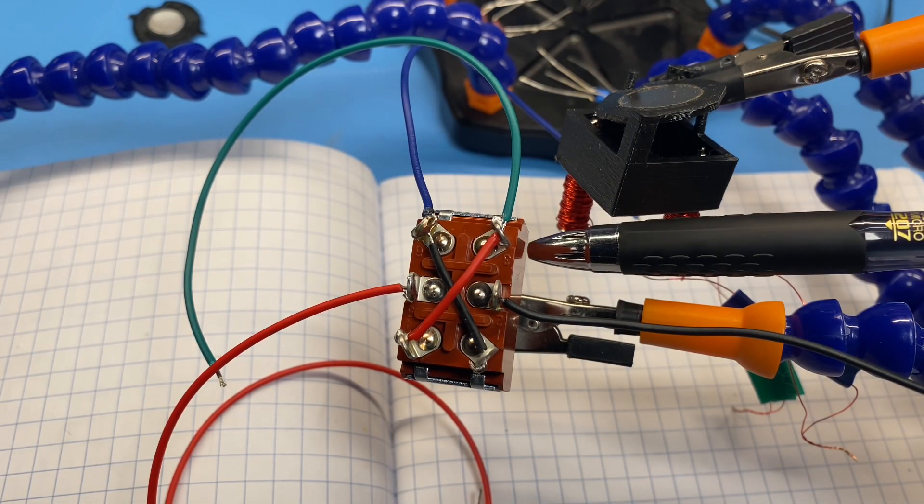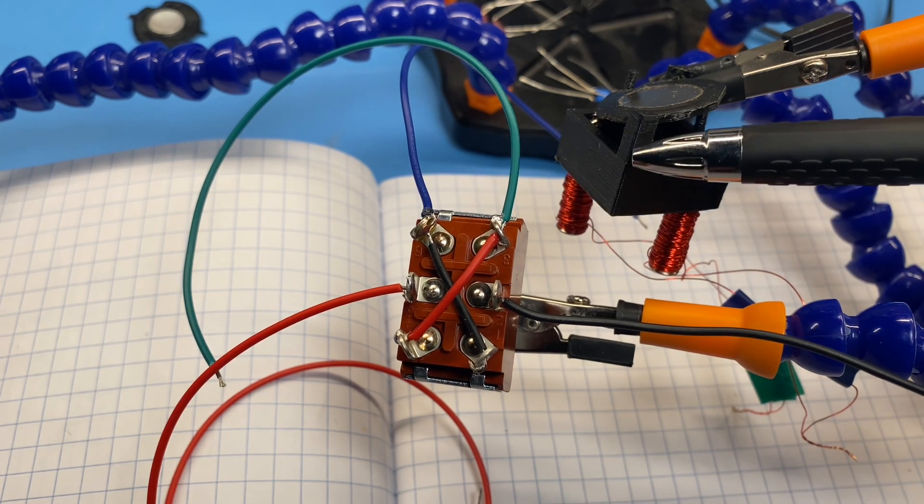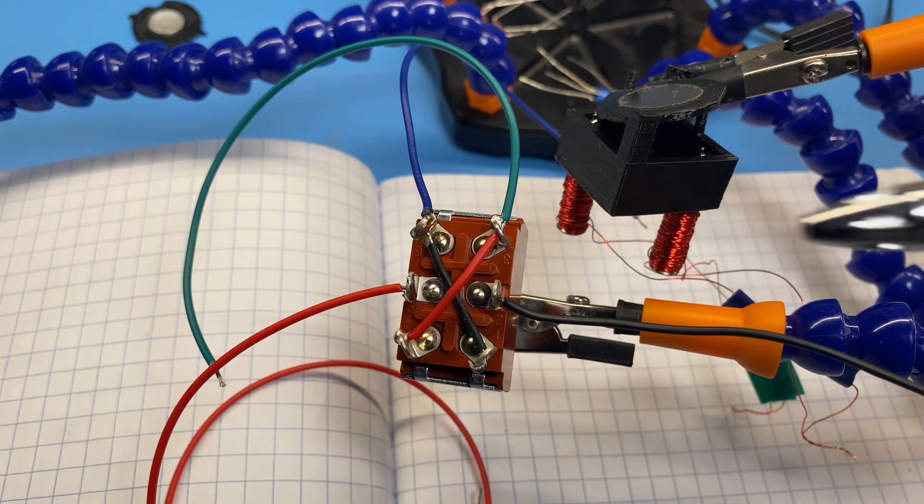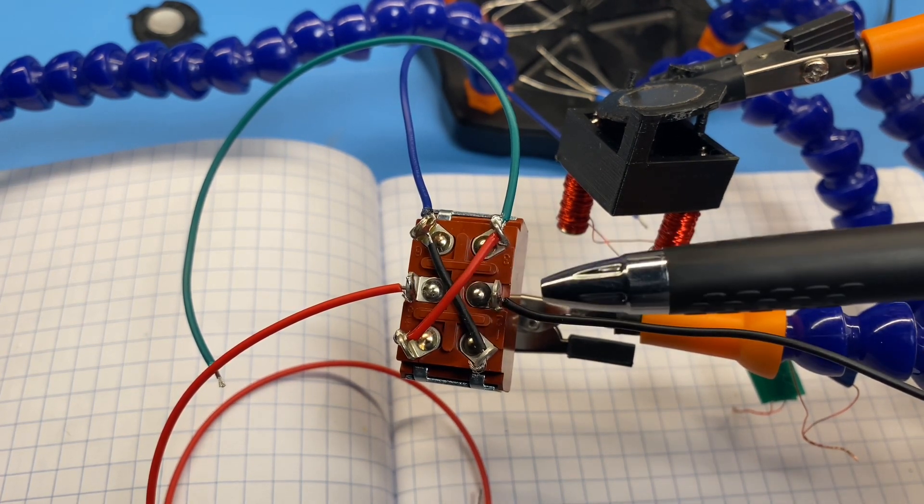So here's the switch all soldered up. The green and blue leads are going to be connected to the electromagnets here underneath the flip dot. Power is going to be provided through the middle two lugs, through the red and black wires here.